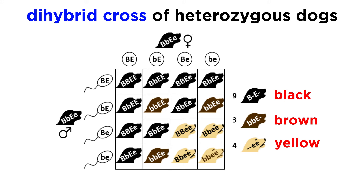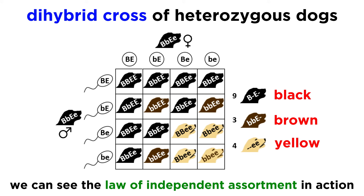Mating two dogs that are heterozygous for both traits to get a dihybrid cross clearly shows the law of independent assortment in action, when examining the distribution of dogs with different coloring.